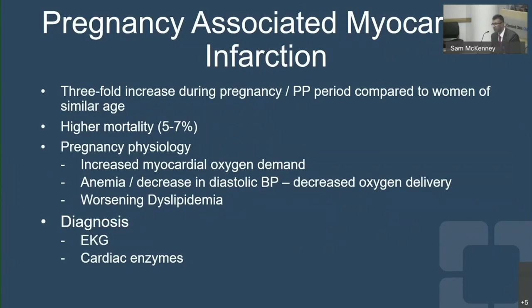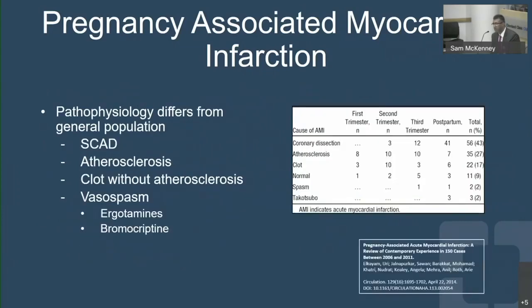Diagnosis of myocardial infarction is very similar to a non-pregnant state — EKG and cardiac enzymes. What differs is the underlying pathophysiology. Up to 40% of MIs are due to spontaneous coronary artery dissection, or SCAD, which is quite different from the general population. Atherosclerosis, the leading cause in the general population, is actually second in pregnancy. There are also cases due to clot formation from the hypercoagulable state of pregnancy.